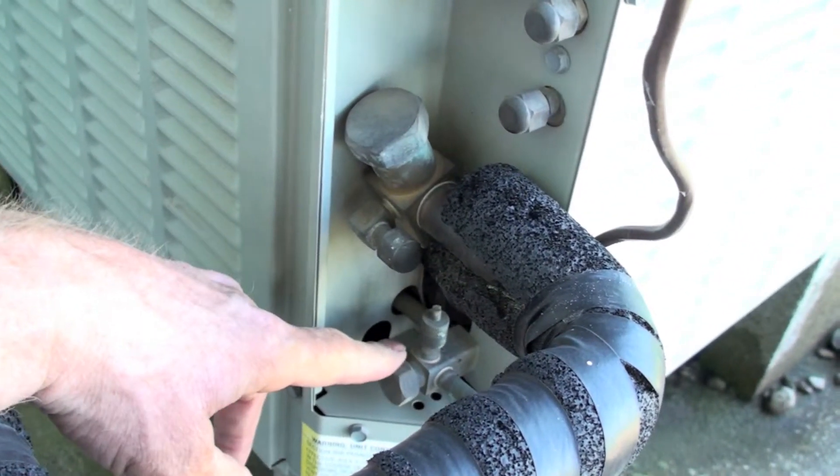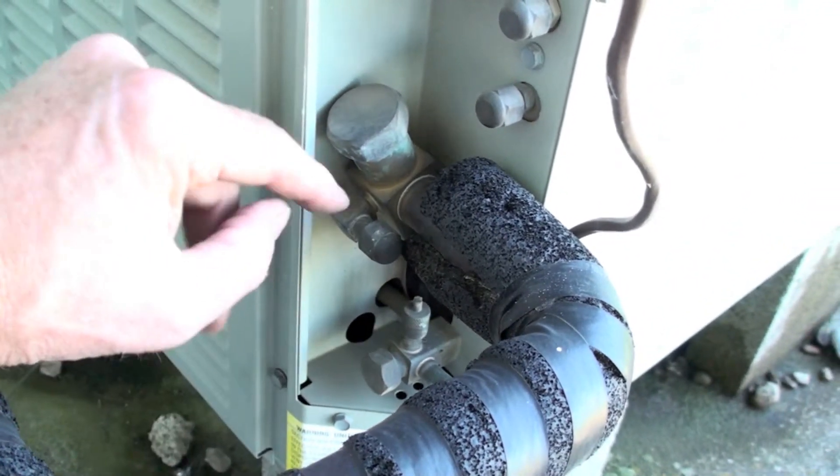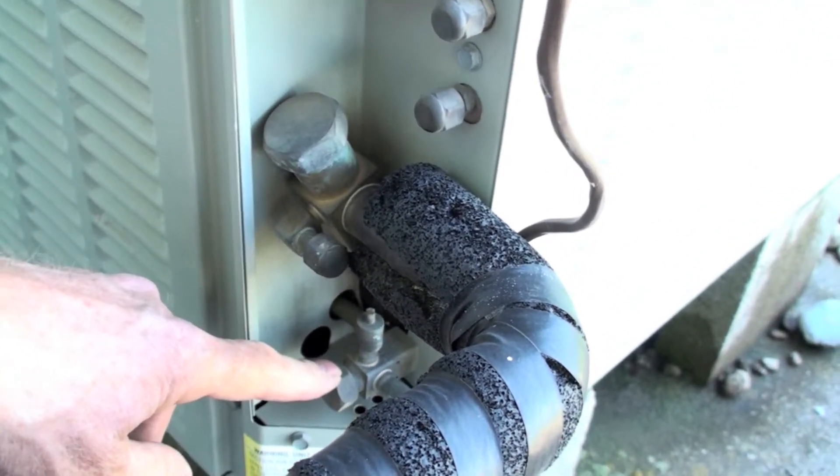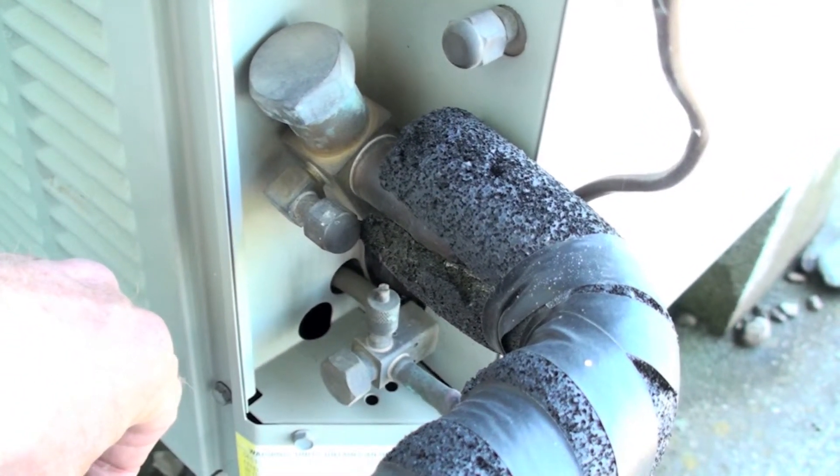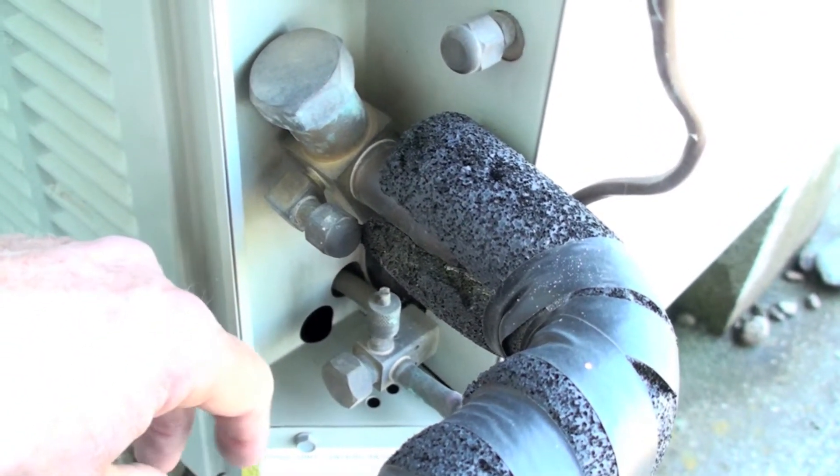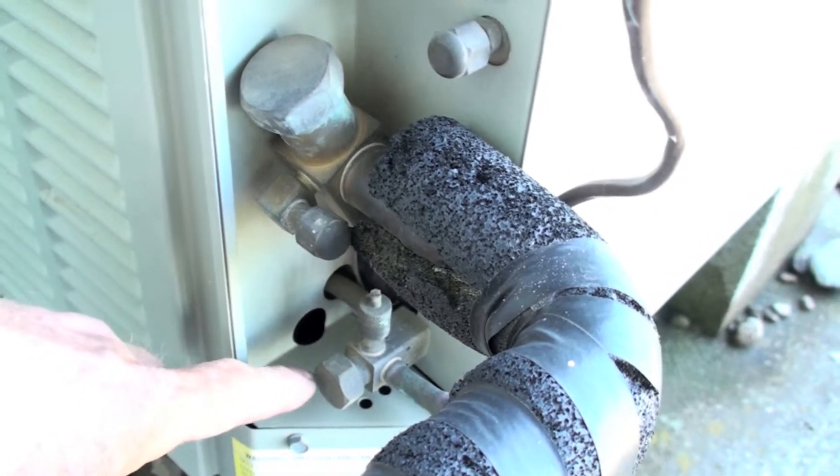And the liquid service valve. We're looking for oil slicks on any of these. Now you can see these are pretty dry. It doesn't seem to be any leakage in these at all. This is what you're looking to see.